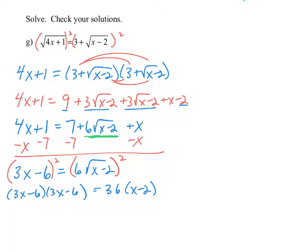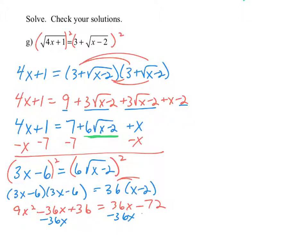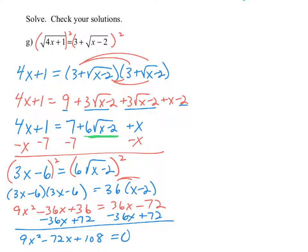We simplify the left side using FOIL: the first gives 9x squared; the outer and inner each give minus 18x, which are like terms combining to minus 36x; and the last gives plus 36. So the left side is 9x squared minus 36x plus 36. Distributing on the right gives 36x minus 72. We have a quadratic equation, and we solve it by setting everything equal to 0: subtracting 36x and adding 72 to both sides gives 9x squared minus 72x plus 108 equals 0.